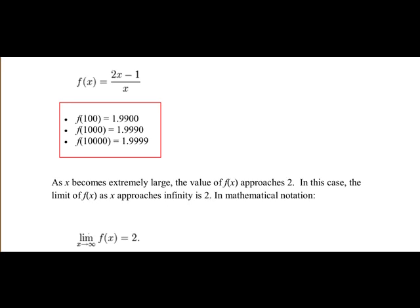We write that as shown at the bottom of the screen: the limit as x approaches infinity of f(x) — that's the function (2x minus 1) over x — is equal to 2. What that means is, as x gets closer and closer to infinity, in other words as it gets extremely large, the y value will approach 2.